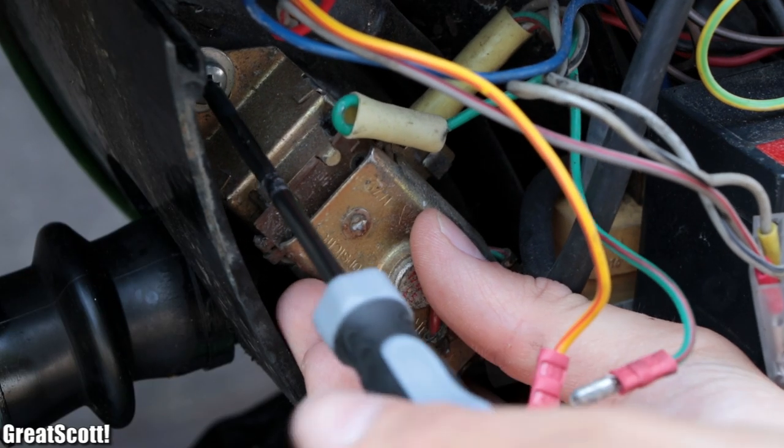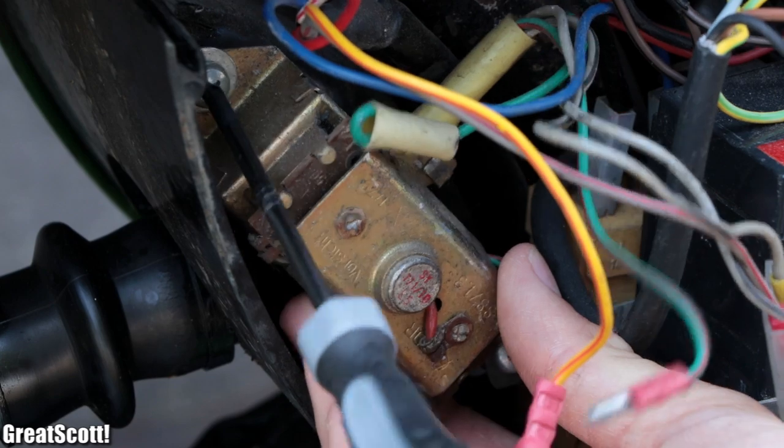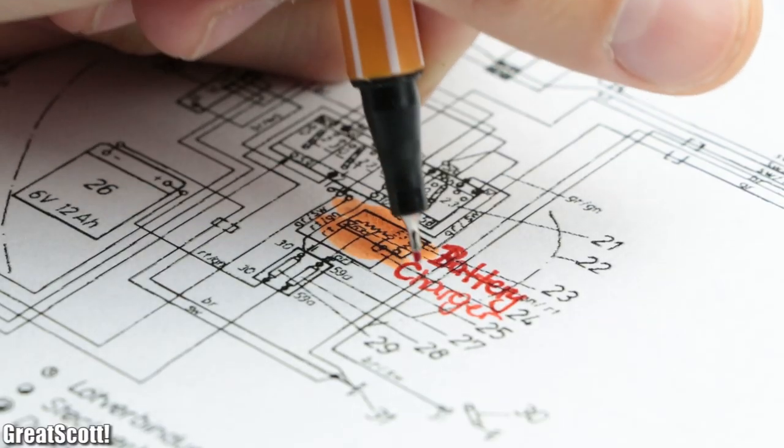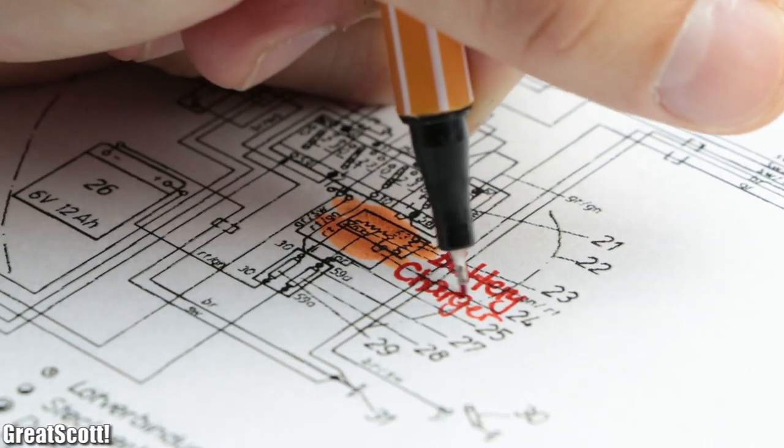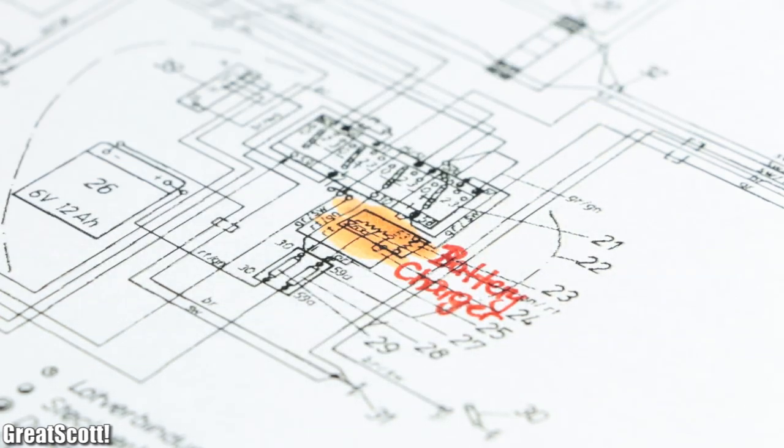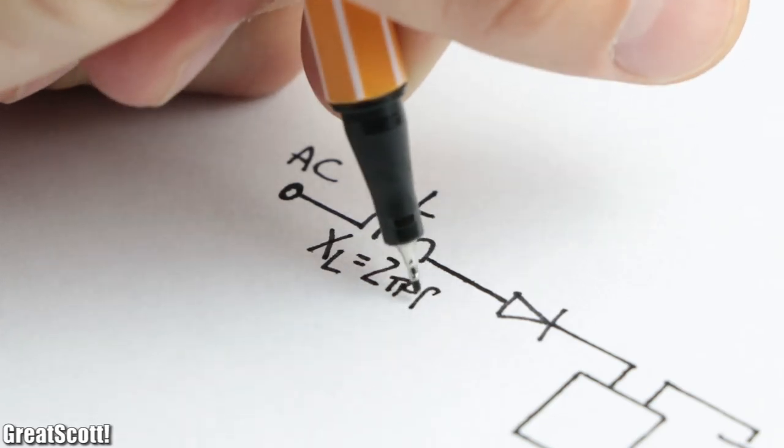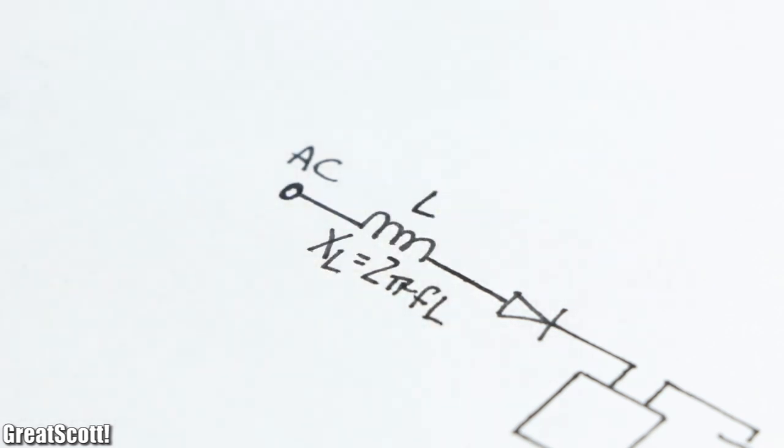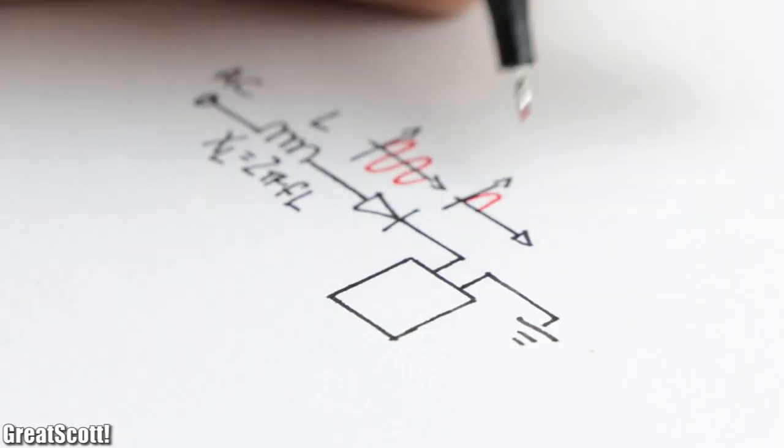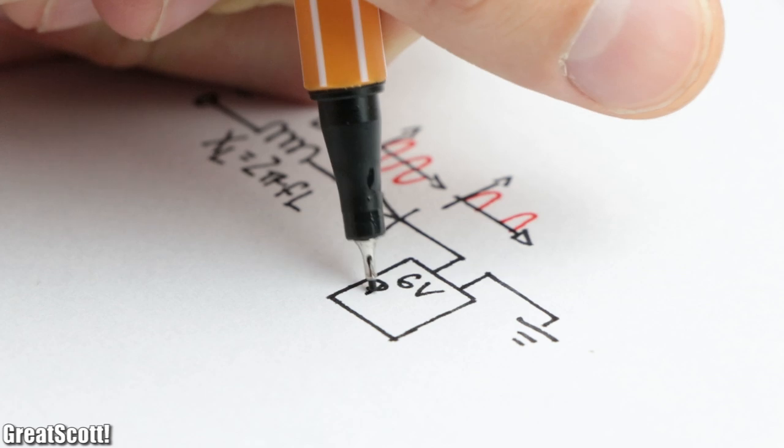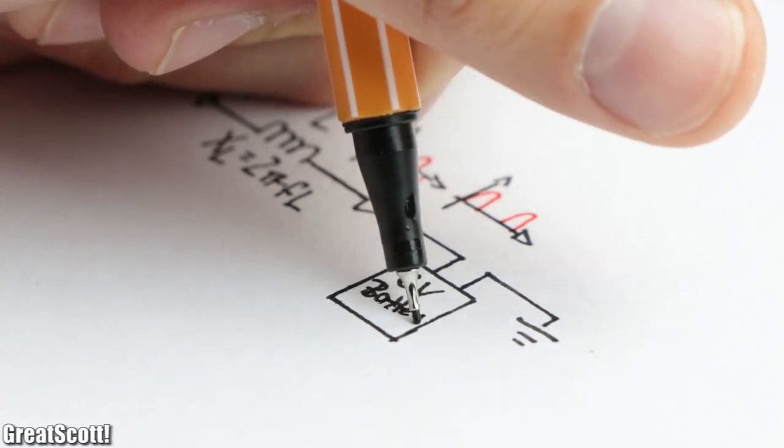So the first thing I did was removing this component right here which is labeled in the wiring schematic as the battery charger circuit. This component only uses an inductor to reduce the voltage at high RPMs and a diode to rectify the AC voltage, which is truly an old-fashioned way to charge a battery.